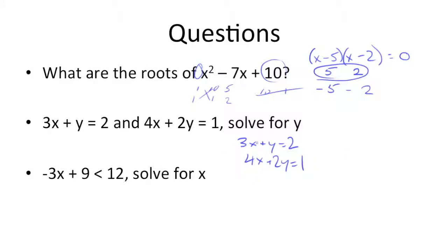Next, let's get rid of the x. So we need to multiply the bottom equation through by 3 and the top equation through by 4 so that we can cancel out the x's. So multiplying the top equation through by 4,